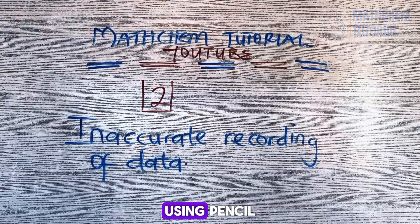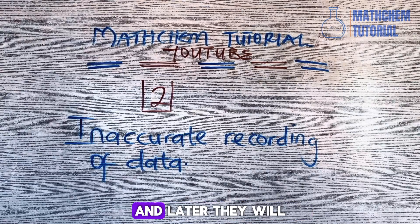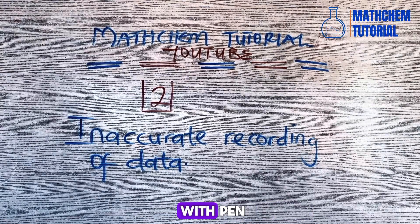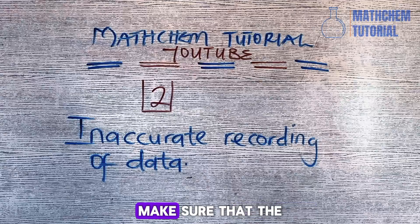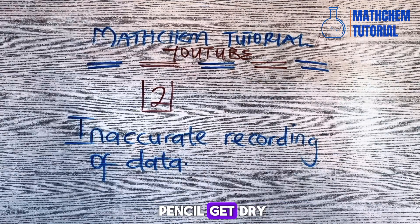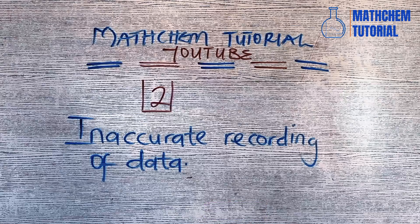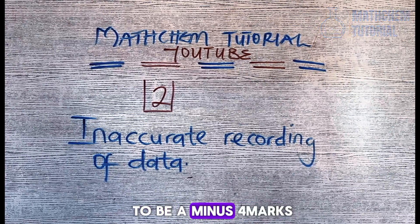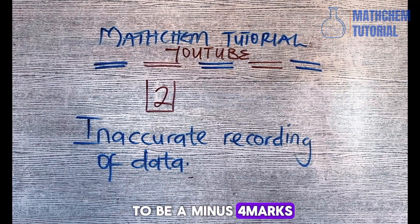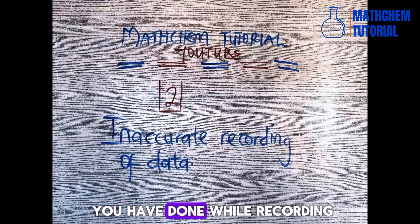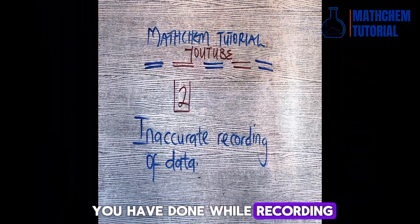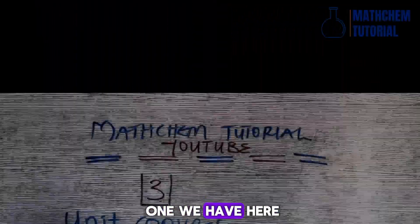Also, don't trace over pencil with pen. Some students will record their data after titration using pencil and later trace it with pen — avoid that. Make sure the pencil is fully erased and your recording of data is clean and perfect. Using pencil to record your data will result in a minus four marks deduction from your titration score.